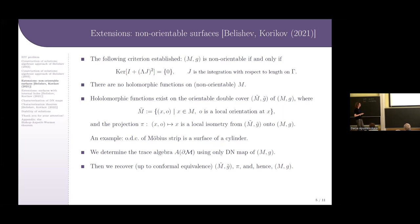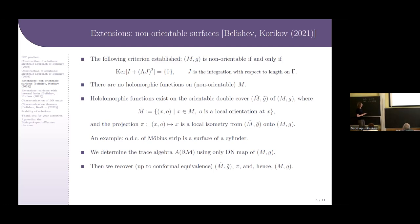However, holomorphic functions do exist on the orientable double cover of the surface M. Roughly speaking, the cover is the surface whose points are pairs (x, o), where x is a point of the surface M and o is a local orientation at the point x — that is, o is plus or minus one locally. The metric on the cover is determined in such a way that the projection p from (x, o) to x is a local isometry from the cover to the surface M.